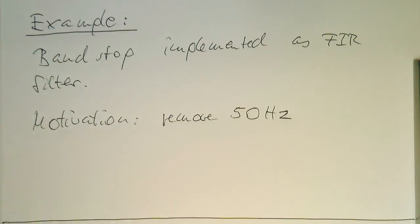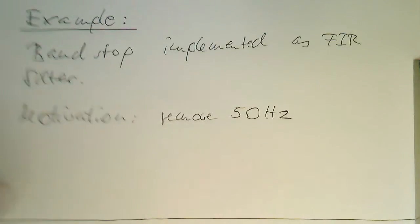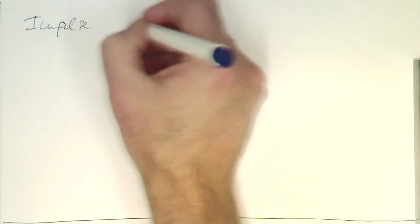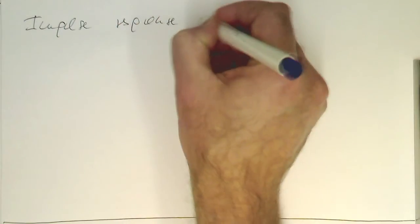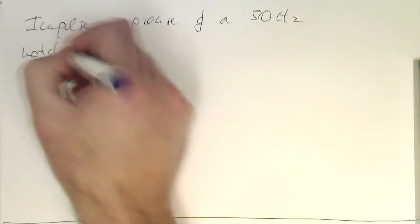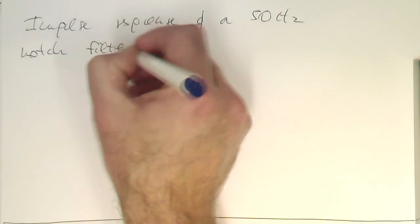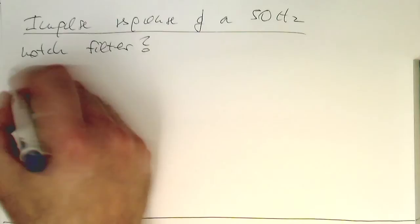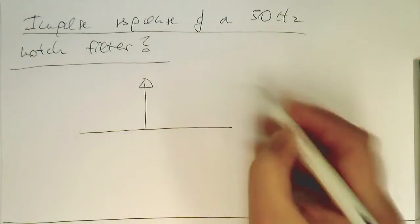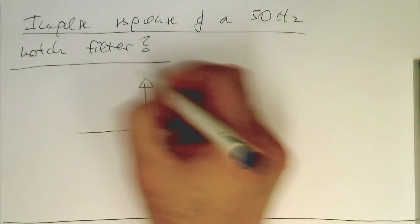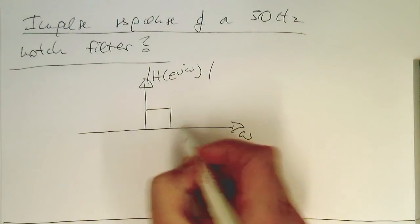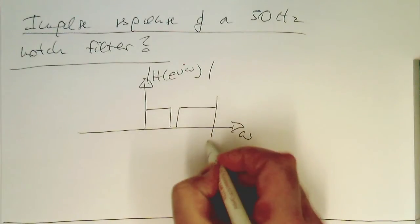In order to do this, we need to calculate our impulse response. What is the impulse response of a 50 Hz notch filter? We start by drawing our ideal response — that's step number one. We have omega on the x-axis and H(e^{j omega}) on the y-axis. Our ideal response looks like a band-stop shape, ending at pi.